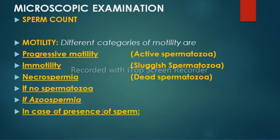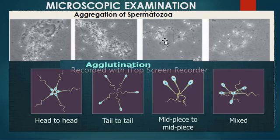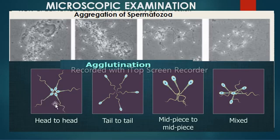In the presence of sperm, the sample should be examined to determine motility classification, aggregation, and agglutination. Aggregation is the adherence of immotile spermatozoa to each other, or the adherence of motile spermatozoa to non-sperm elements like mucus, epithelial cells, or other debris. Sometimes the cause of aggregation is accessory gland infection. Agglutination is when motile spermatozoa stick to each other. It may be head-to-head, tail-to-tail, mid piece-to-mid piece, or mixed.